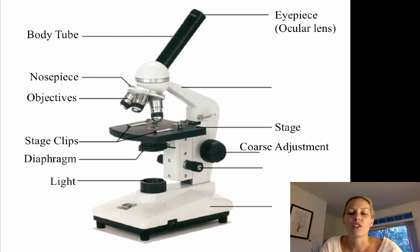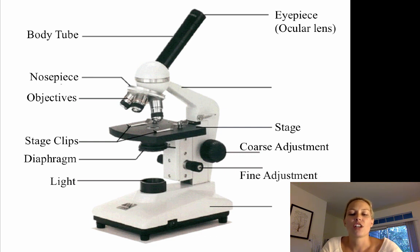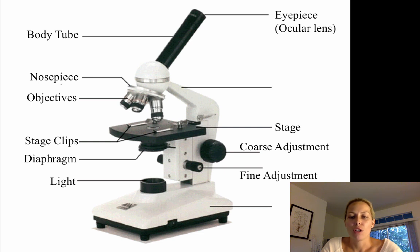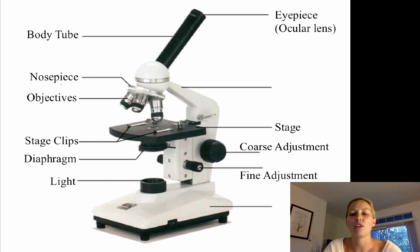Next we have the coarse adjustment knob, the largest knob on the microscope. It is responsible for moving the stage up and down and is used to focus your specimen. The fine adjustment knob, the smallest knob, is responsible for sharpening the image — if the edges seem a little fuzzy, you use it to fine-tune your image so that it is sharp and clear.